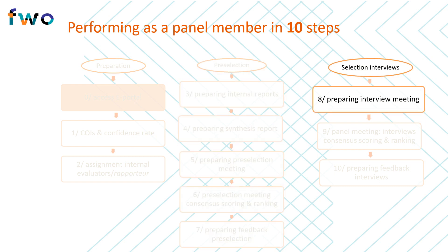In the third phase of the evaluation process, the applicants who made it through the pre-selection are interviewed. In step 8, panel members should prepare for the interview meeting by formulating questions they will ask the candidates. The two internal reviewers and the rapporteur are expected to prepare questions, but other panel members are strongly encouraged to do so as well. These questions should cover all evaluation criteria, namely the candidate as well as the project. It is useful to consult the interview scoring grid and formulate specific questions to assess, for example, the candidate's competencies, the groundbreaking nature of the research, and its methodology.